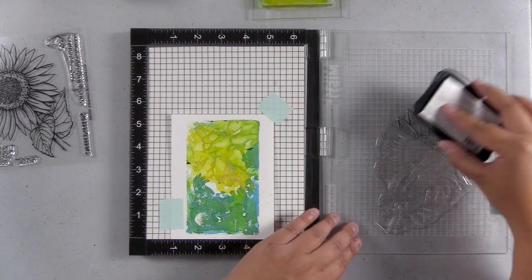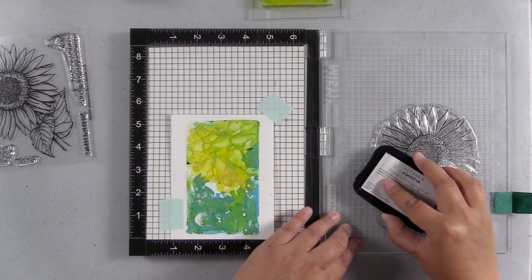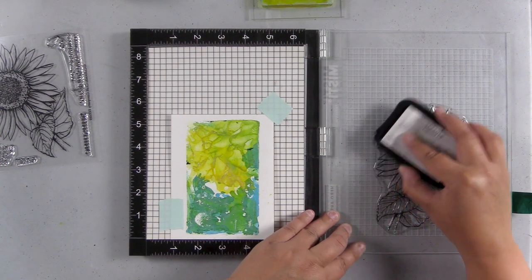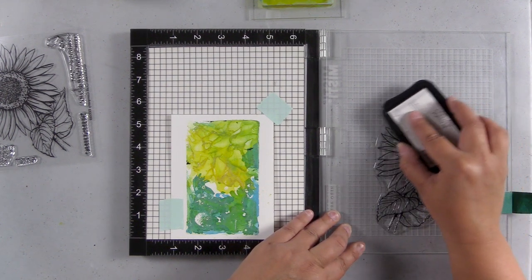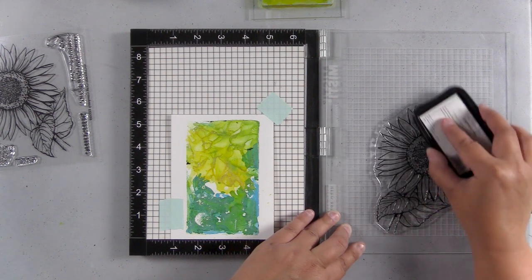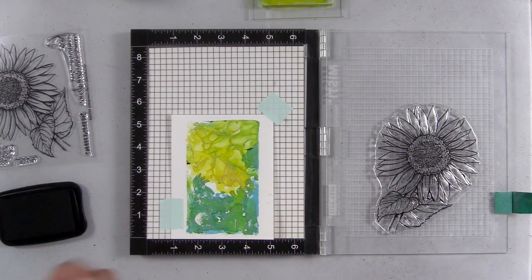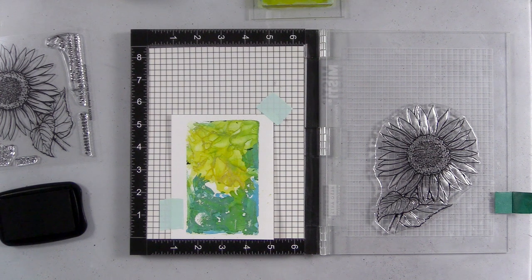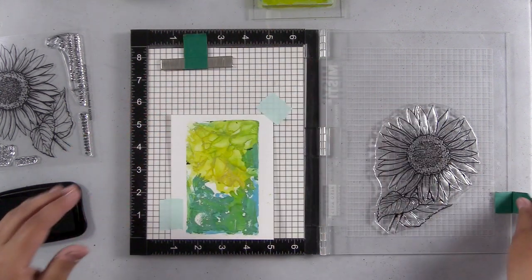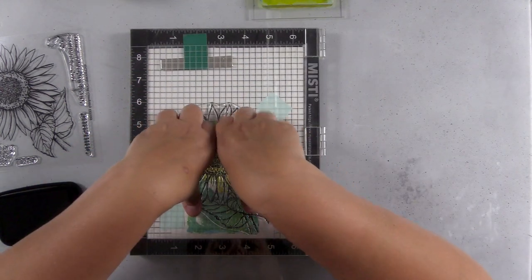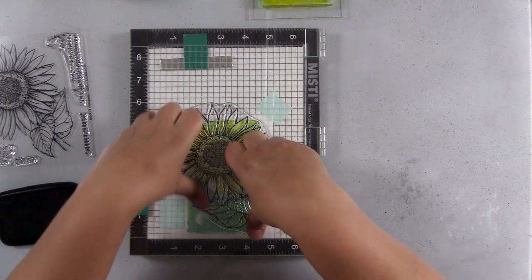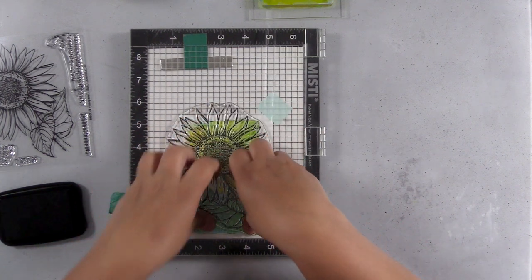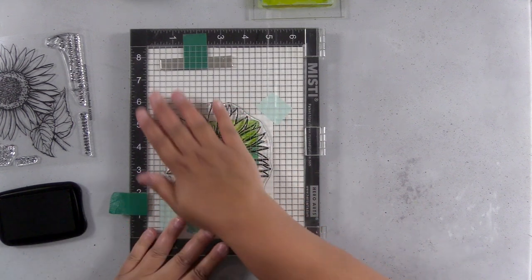So I'm going to go ahead and stamp my image here and I'm using obsidian pigment ink. This one is from Altenew and I'm going to stamp this twice right on top of the gel print. So I love to watercolor and I love to Copic color, but I don't always have time to color a large image like this. So when I'm in a bind or I'm short on time, I'll just go ahead and color the background like I did here with a gel plate and a gel print, and then I'll just stamp the image with no coloring at all on top of it.